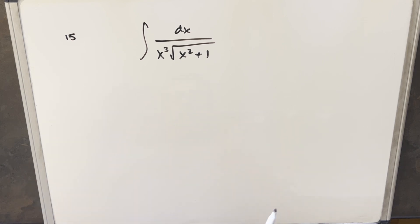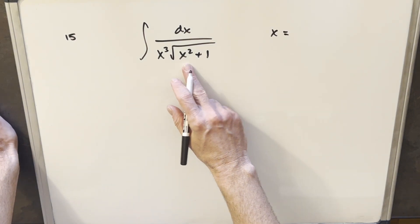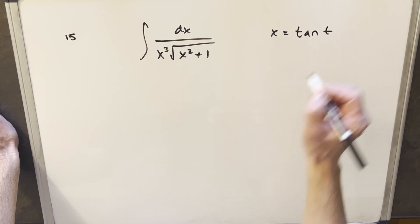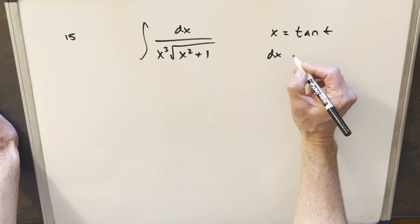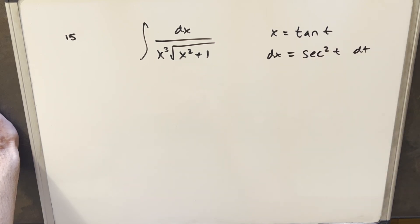So to get started with this, what I want to do is for my trig substitution, because we have x squared plus 1 here, I'm going to set my x equal to tan of t. We'll take a derivative. So our dx value is just going to become secant squared t dt.